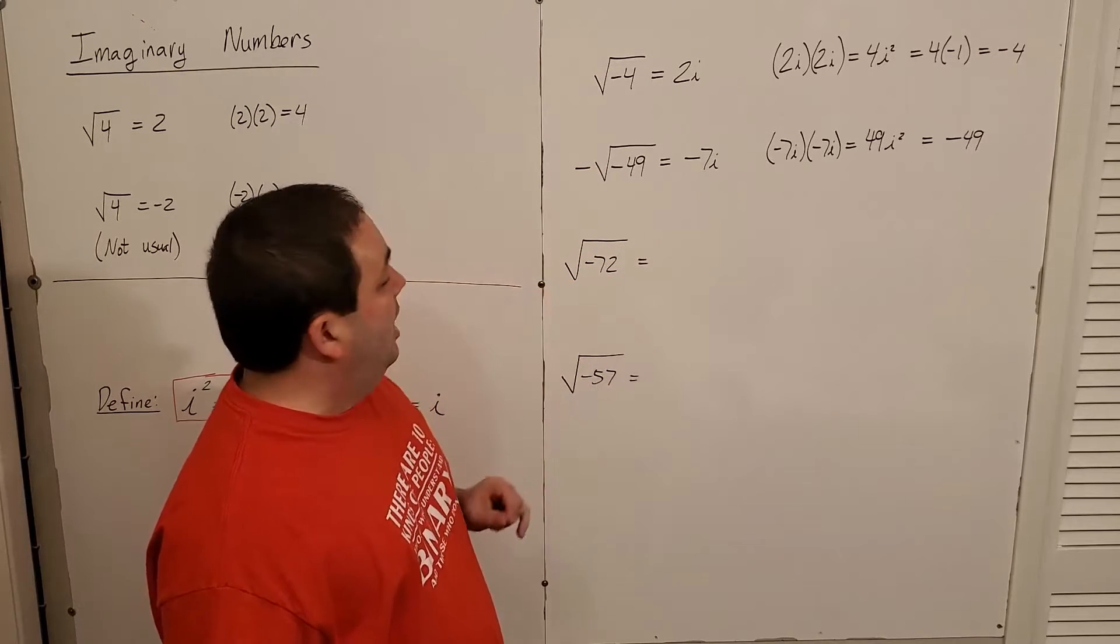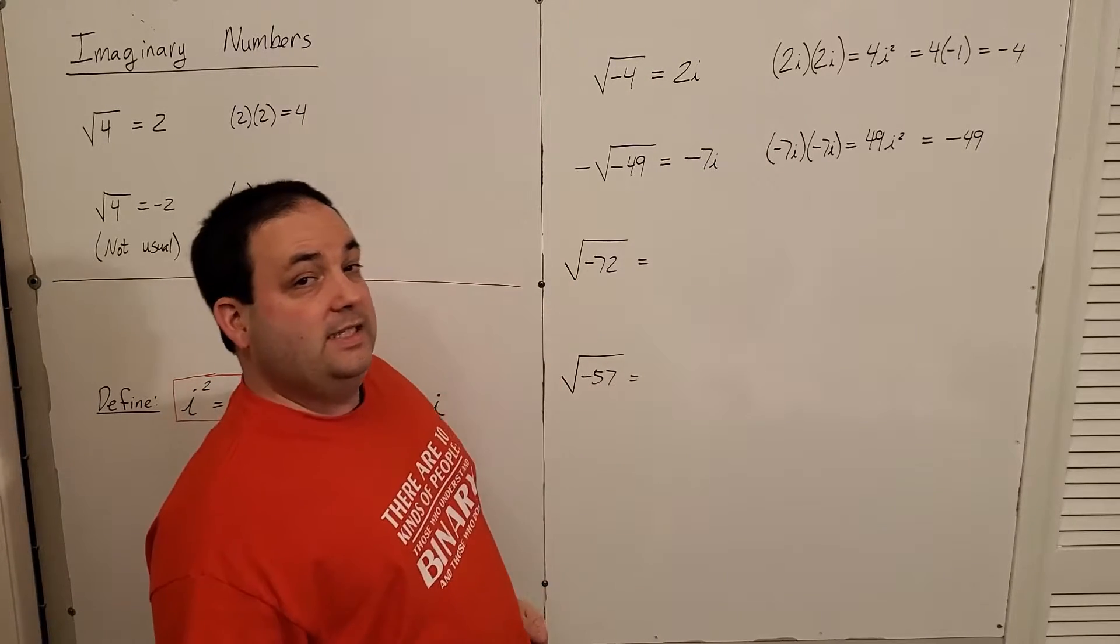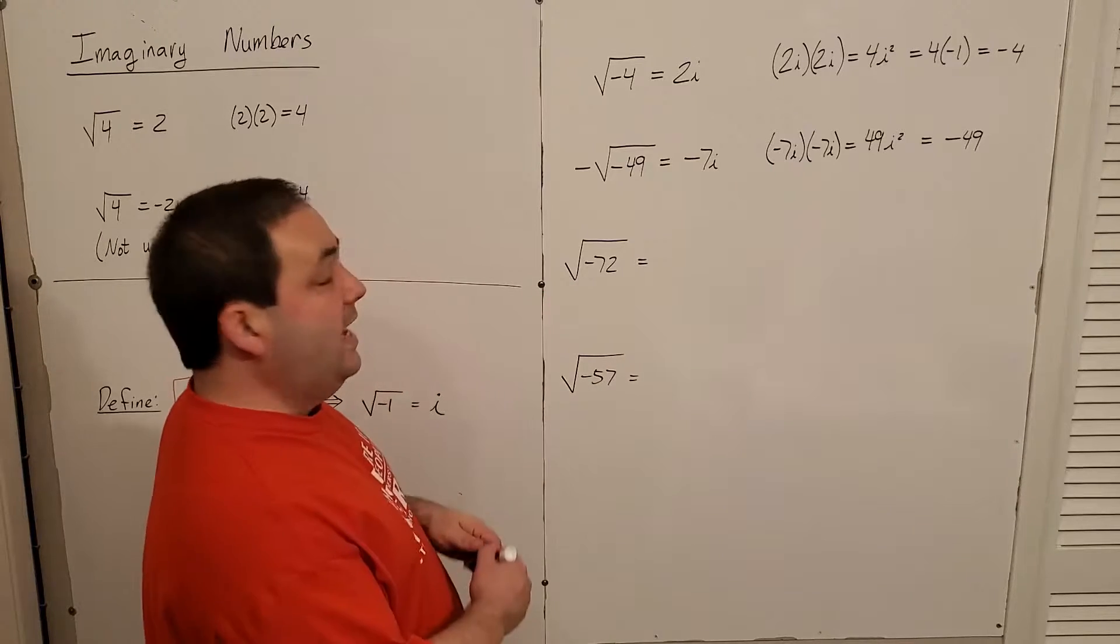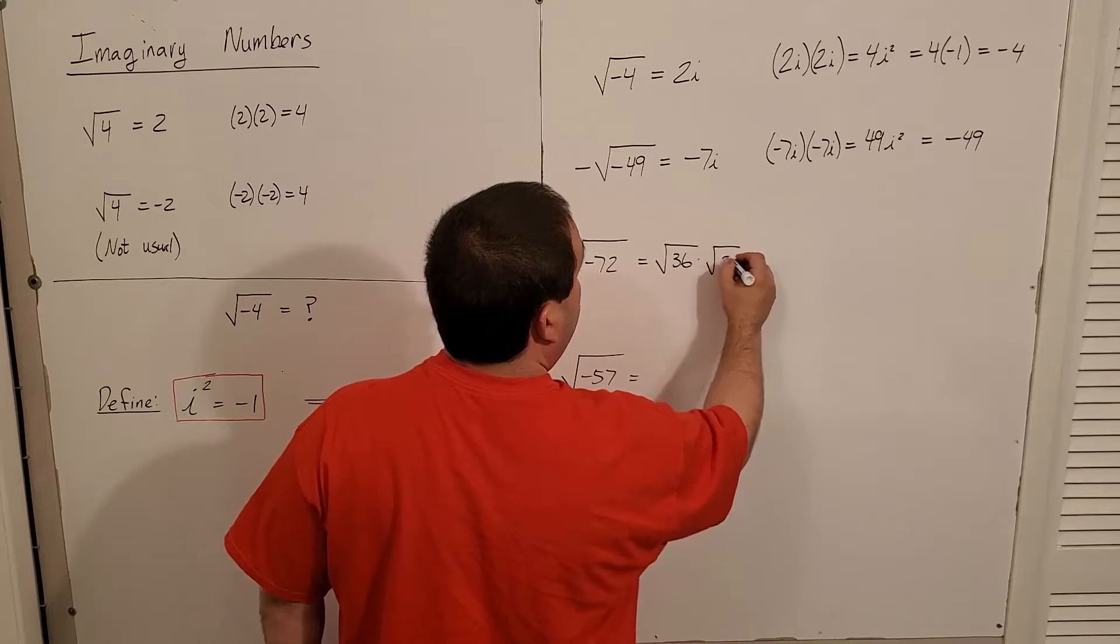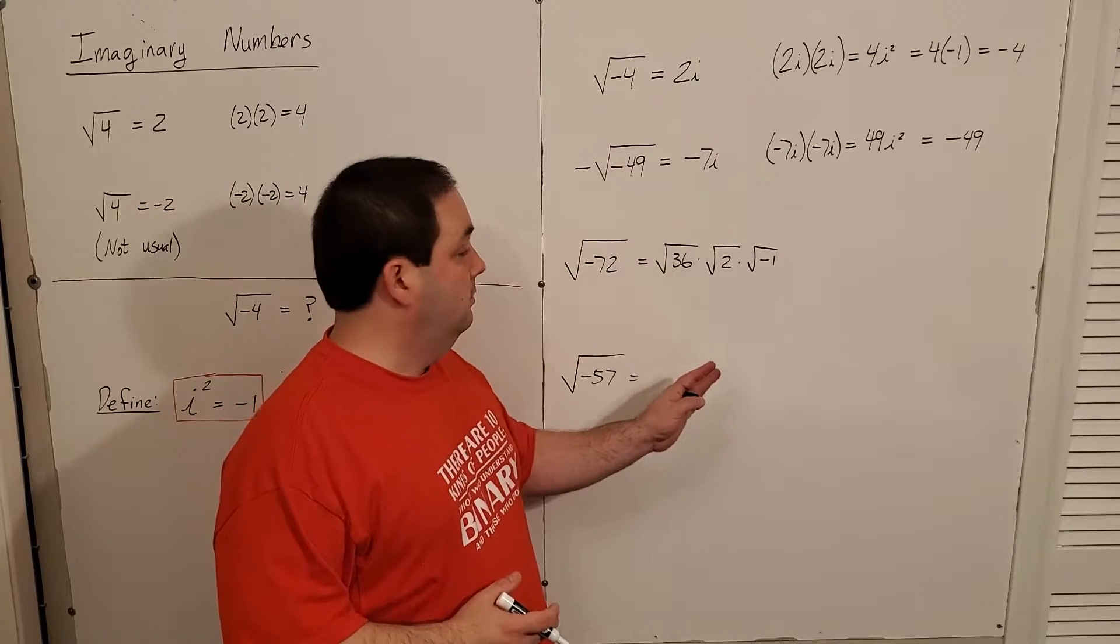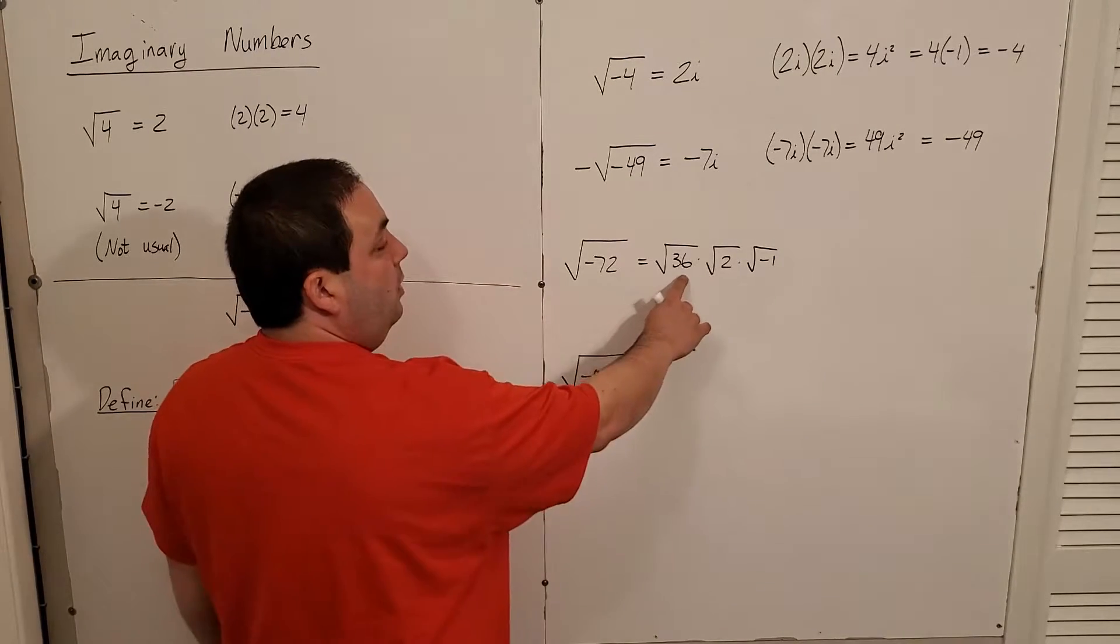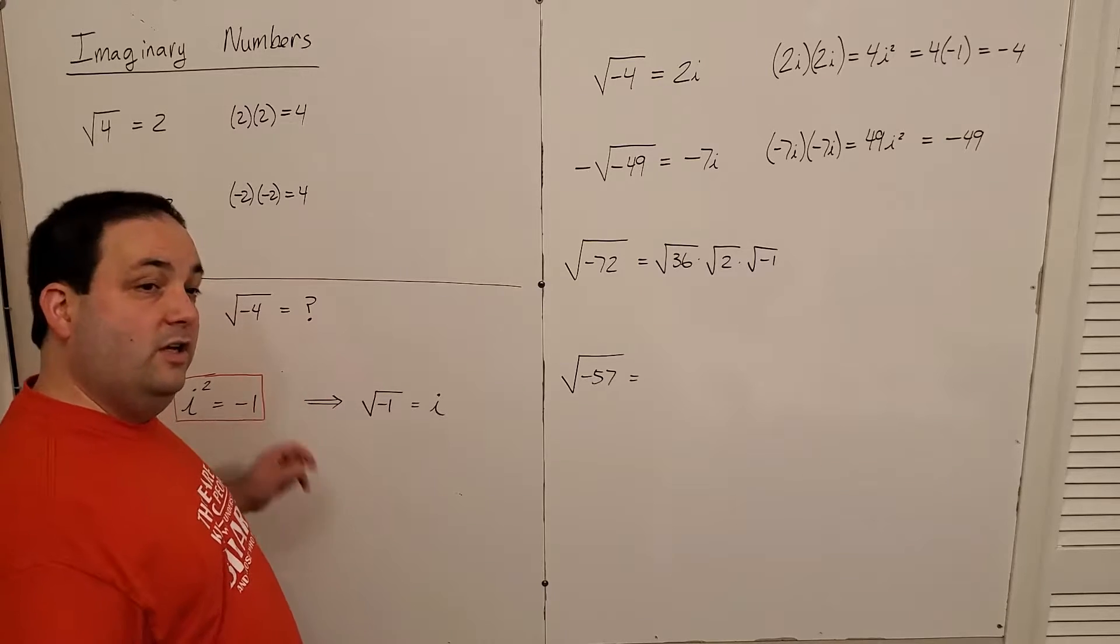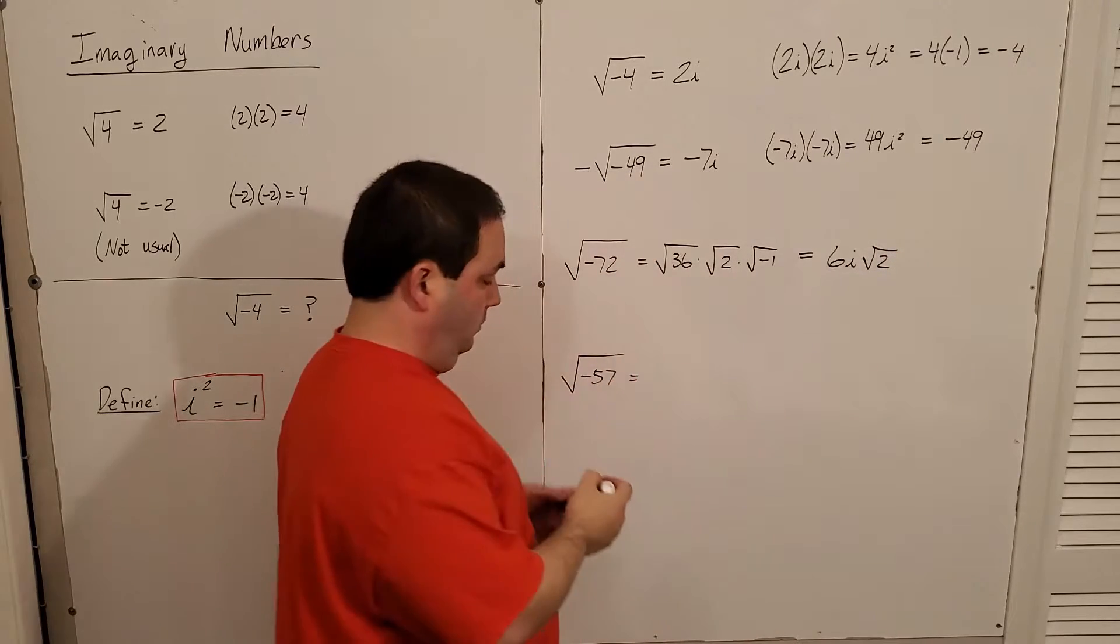Our math doesn't change. I just have to be able to recognize that there's a negative underneath the square root. All of the simplification that we normally do still holds true. Square root of negative 72, I would split up into the square root of 36 times the square root of 2 and the square root of negative 1. Then I have 6i square root of 2.